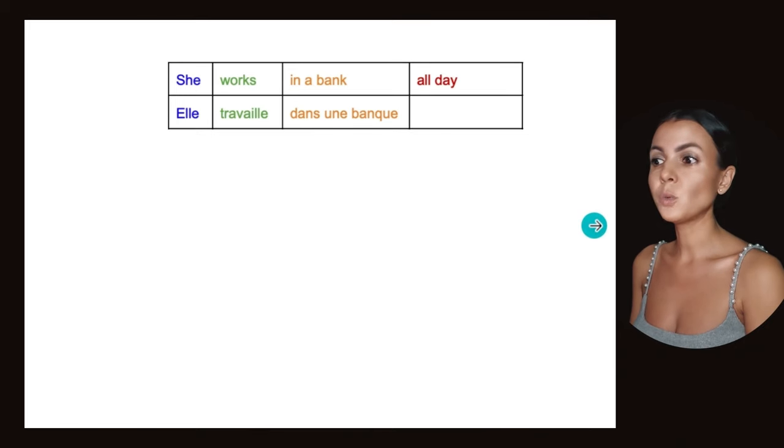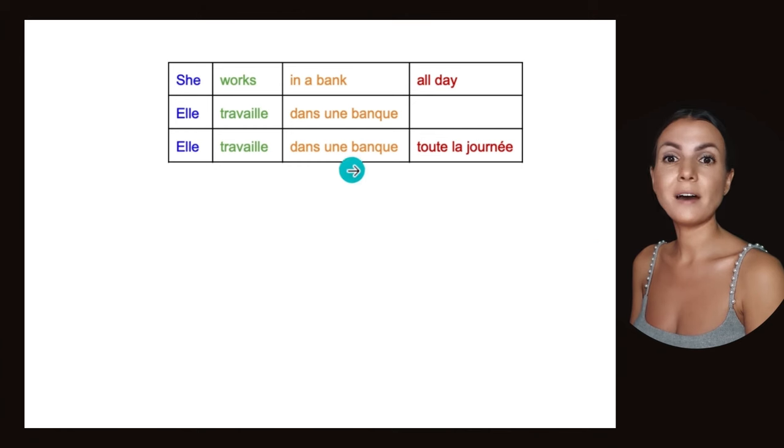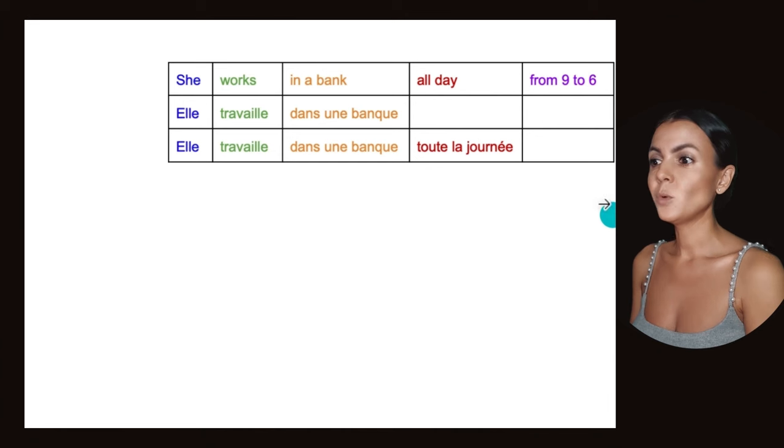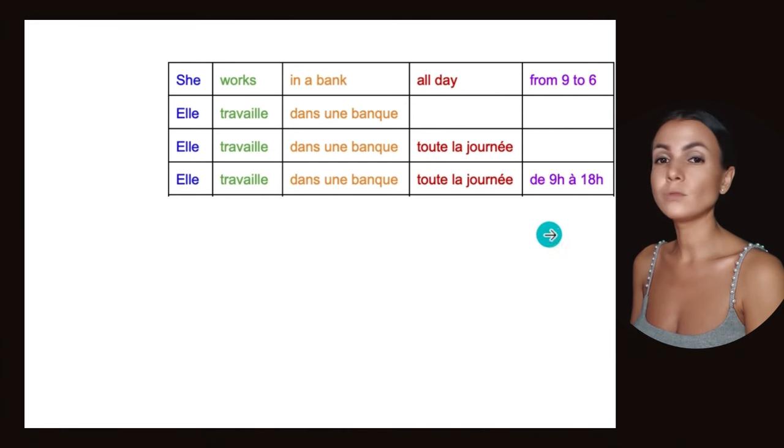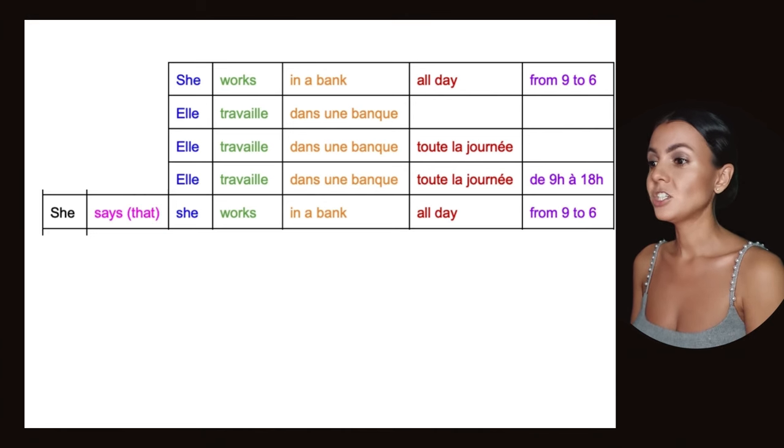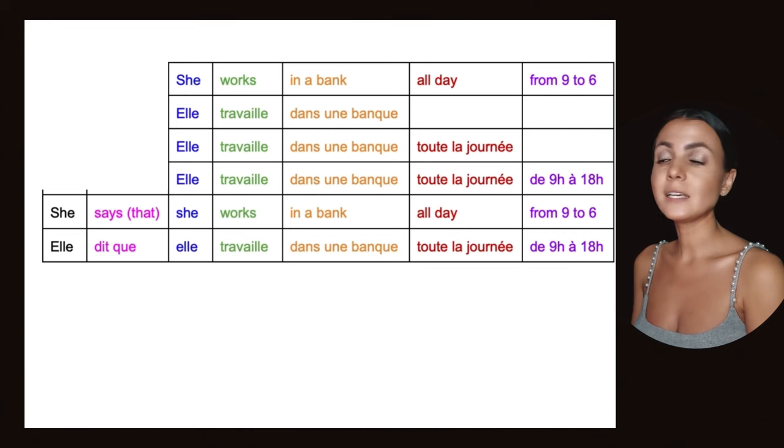Let's build up and see that it's completely the same. So she works in a bank all day - Elle travaille dans une banque toute la journée. She works in a bank all day from 9 to 6 - Elle travaille dans une banque toute la journée de 9h à 18h. Same.